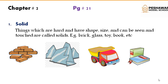Hard things — wo cheeze hoti hai jo ke sakht hoti hai, jinki apni shape hoti hai, size hoti hai, jinko hum dekh saktay hai aur chhoo saktay hai. They have a specific shape and size. For example, when you look at your book, you can see that your book has a specific shape and size — you can see and touch it. So all the things which we can see, touch, and which have a specific size and shape and are hard as well, they are solids.